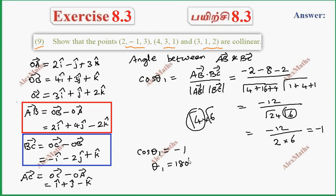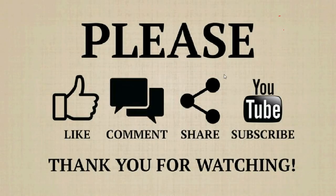So angle between AB and BC - you can see this angle is 180 degrees. This is collinear. Therefore they are collinear. We have 180 degrees, so the points are collinear. So this is the answer, the points are collinear.